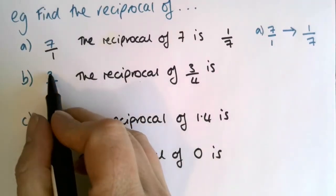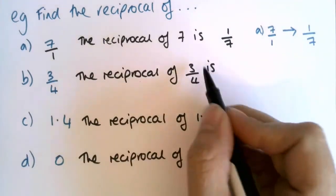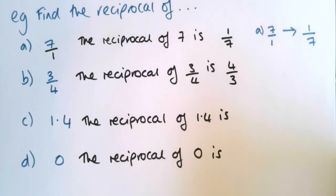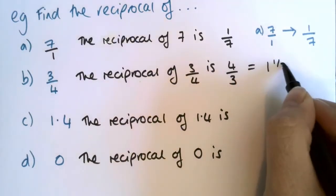So 3 over 4 is already in the form A over B, so the reciprocal of 3 over 4 is 4 over 3. Now I wouldn't really leave that like that, I would change that into a mixed number. So that's 1 and a third.